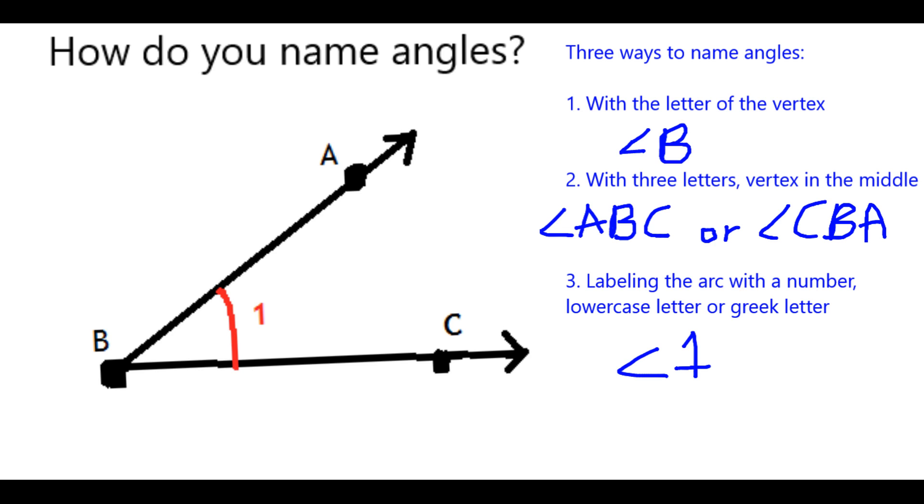Incidentally, in case you see it sometime and don't know what it is, the Greek letter theta, which looks like this, is also often used to label in the same way that the 1 is used in our particular case. So, that's basically it. Those are your three ways to name or specify in your geometric writing a particular angle. Hope that helps. Thank you.